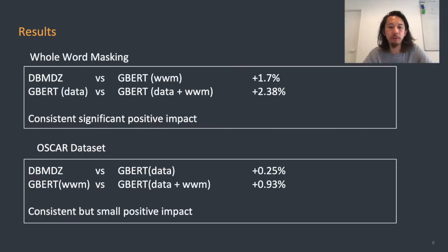Returning to the developments that motivated this work: when investigating whether whole-word masking has impact, we can compare DBMDZ with GBERT whole-word masking, where the addition of whole-word masking gives a 1.7% boost in averaged F1 performance. Comparing GBERT data to GBERT data plus whole-word masking, we see a 2.38% increase. There is a consistent and significant positive impact from adding whole-word masking, which corroborates what was reported by the authors of BERT.